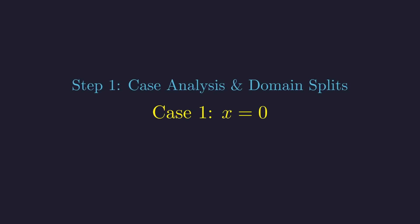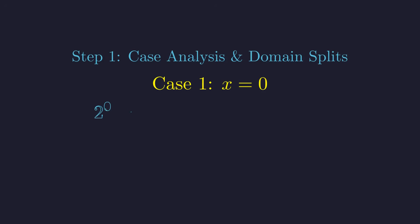Let's start with the easiest case. What happens when x equals 0? When we plug in 0, the left side gives us 2 to the power of 0, which is 1. The right side gives us 0 squared, which is 0. Since 1 doesn't equal 0, x equals 0 is definitely not a solution.